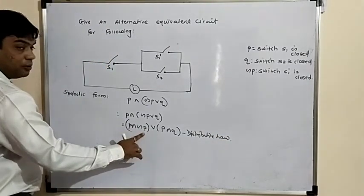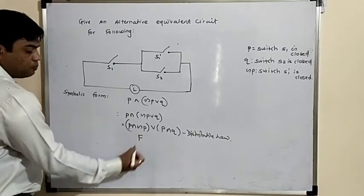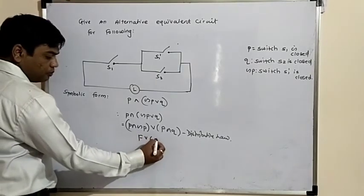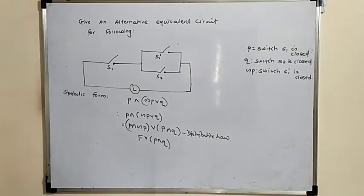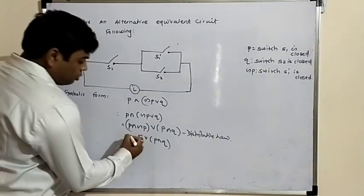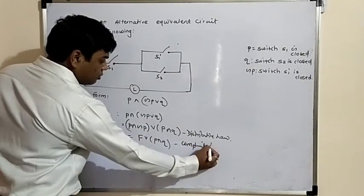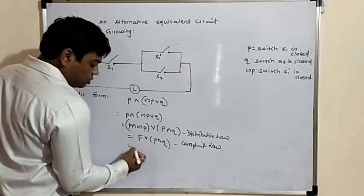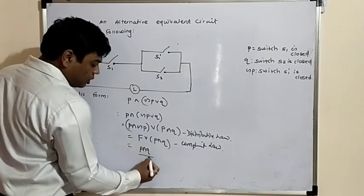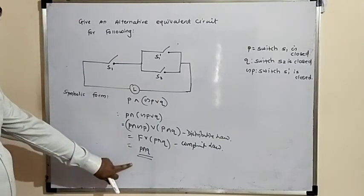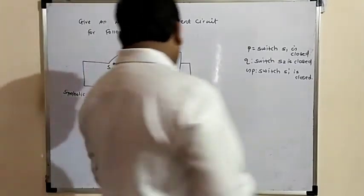What is P and negation P? It is false. So we get: false, or P and Q. This is the complement law. False or with P and Q gives you just P and Q. This is the simplest form of the circuit.